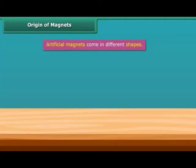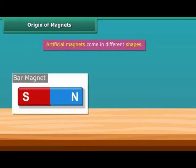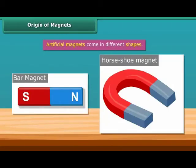Artificial magnets come in different shapes. For example, bar magnet, horseshoe magnet, etc.